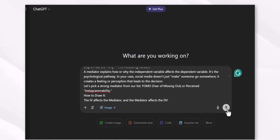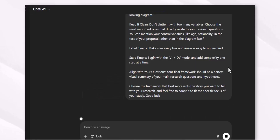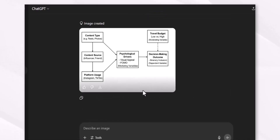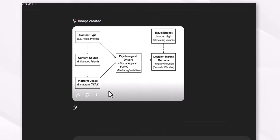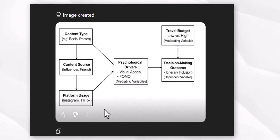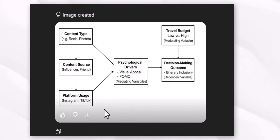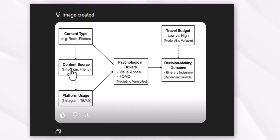Put the instructions into ChatGPT and press the send button. This is a very concise and clear, up-to-the-mark conceptual framework which ChatGPT drew for me in just a few minutes, simply by using the code or instructions I developed using Google AI Studio.